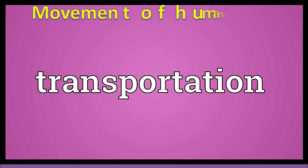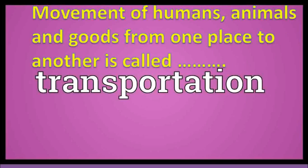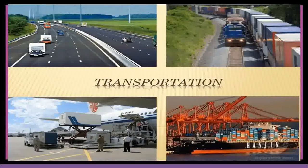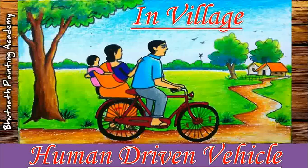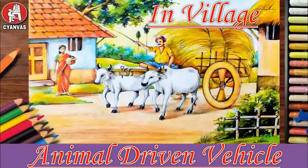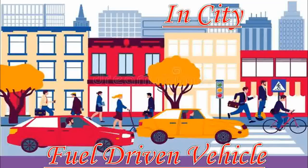Movement of humans, animals, and goods from one place to another is called transportation. In villages, human-driven vehicles are used, like rickshaw and bicycle. You can see here some examples — bullock carts. These are the vehicles used in villages; they are human-driven or animal-driven vehicles.